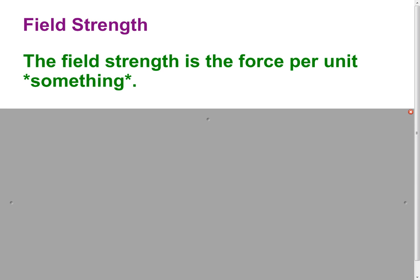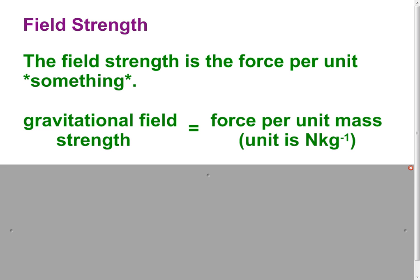Now, the field strength is the force per unit something, where something is the thing that interacts with the field. So what does that mean? Well, the gravitational field strength is defined as the force per unit mass. So that's the force per unit mass of a test object, an object in a gravitational field. And the unit is newtons per kilogram.